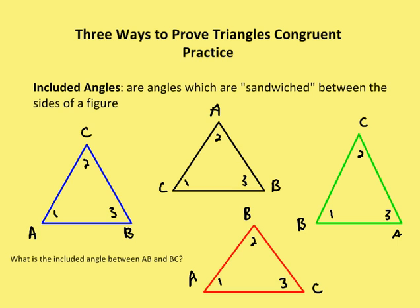Before we move to the second postulate, let's talk briefly about included angles. Included angles are angles which are sandwiched between the sides of a figure. In this case, I have angle one which is sandwiched between sides CA and AB, and also angle one sandwiched between sides AC and CB.